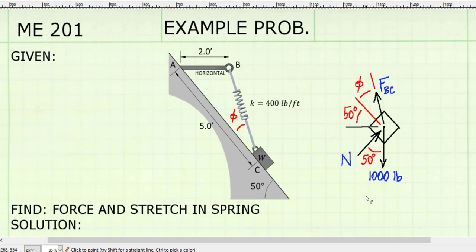We can find angle phi with trigonometry. Then we can write our two equilibrium equations to solve for normal force and force BC. Once we know force BC, we'll have half of what we're asked to find, and then we can use the spring constant to calculate the stretch in the spring.